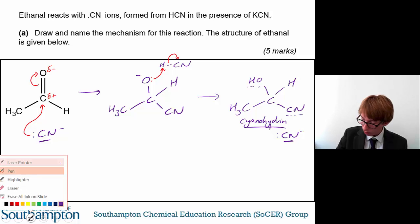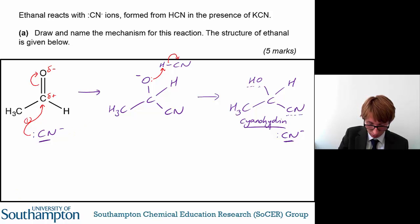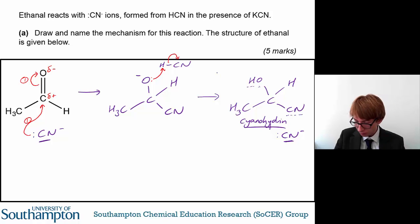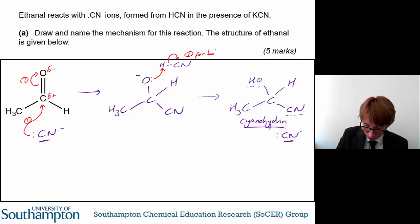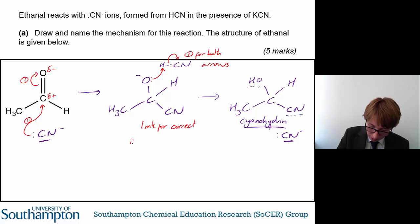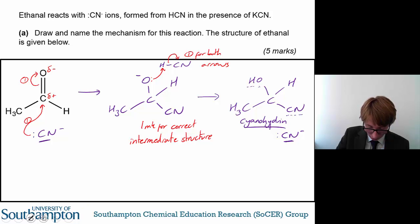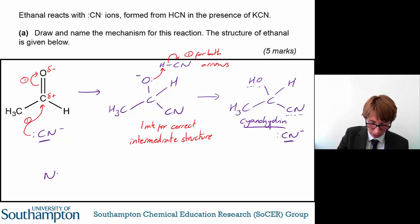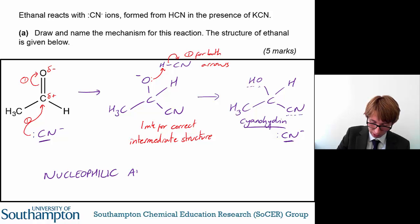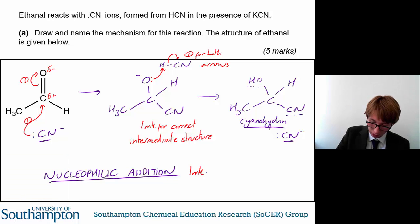In terms of mark distribution: you get one mark for the first curly arrow, one mark for the second curly arrow, one mark for both arrows in the second step, and one mark for the correct intermediate structure. The final mark is for naming the mechanism. This mechanism involves a nucleophilic attack where the nucleophile adds itself to the molecule, so it's called nucleophilic addition — naming it as nucleophilic addition gives you one mark.